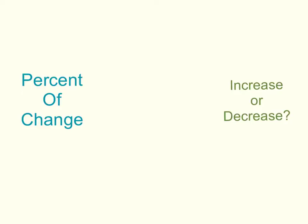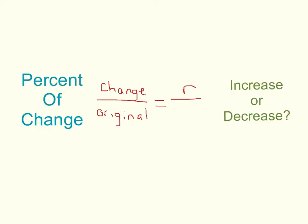To calculate the percent of change between two numbers, you can set up a proportion. Look at how your numbers change — what do they go up by, or what do they go down by — and then divide by whatever the original is. That equals the percentage over 100, so we're always solving for this variable to find the percent in which your numbers have changed. Then you always decide: did my numbers increase or decrease?